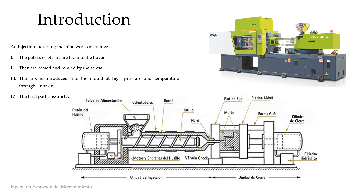Firstly, I will clarify how an injection molding machine works. Basically and very briefly, the plastic or resin pellets are introduced through the hopper. The motor makes them rotate by means of a screw while it is heated. The mix passes through a nozzle and is introduced at high pressure and temperature into a mold, which contains the negative of the part to be manufactured. Subsequently, after a waiting period, the mold slide opens and the final part is extracted.